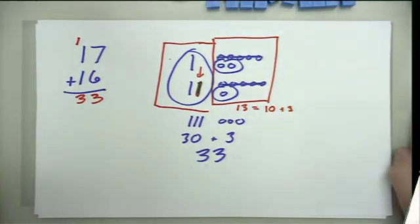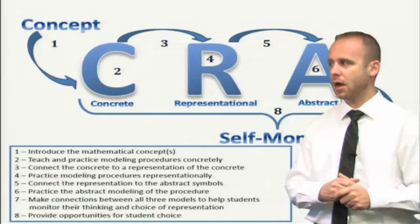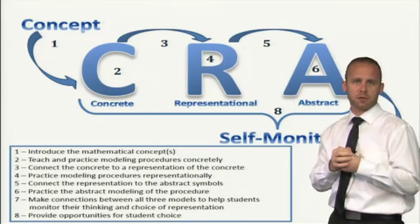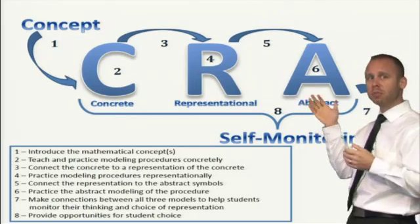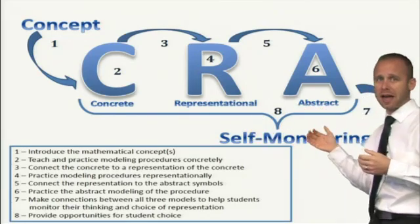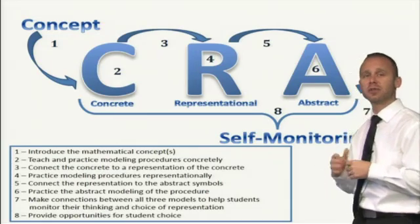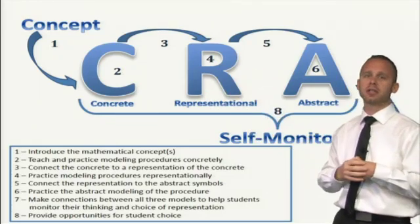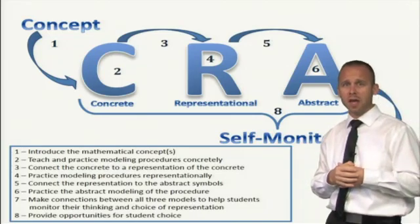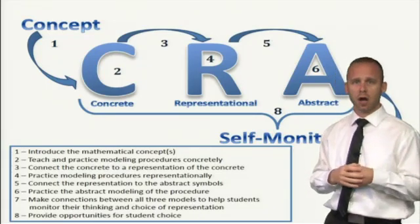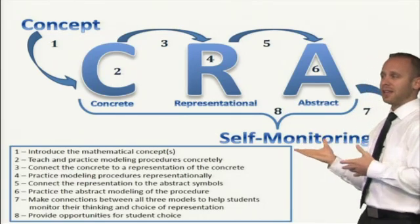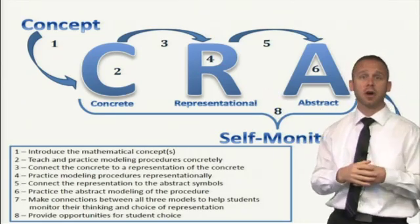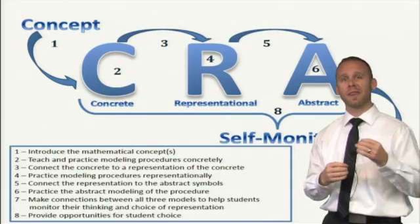Now we've made that jump and we're having students work in the abstract. The important thing is that we continue to make connections back across this sequence of instruction. When students get good with the abstract, they're going to still be thinking the same way as they were thinking with the concrete and with the representation, and might use those things especially if they get stuck. To get students to monitor their own thinking, we have to make sure they understand this connectedness across the entire CRA sequence of instruction.